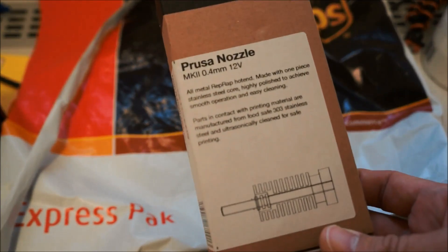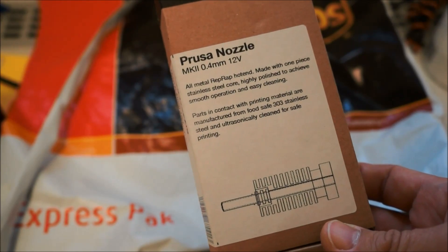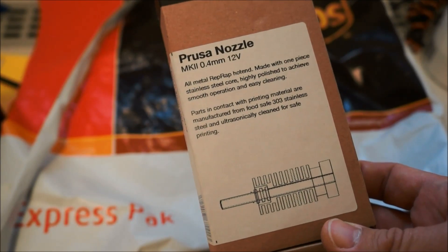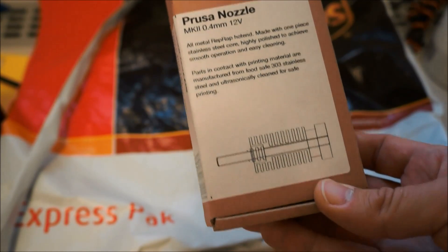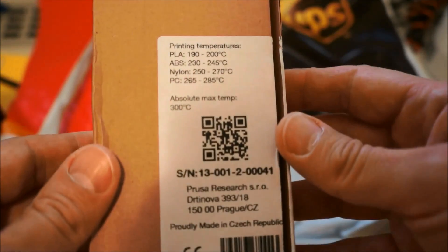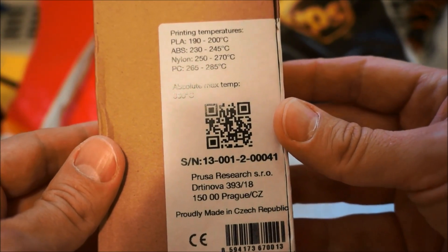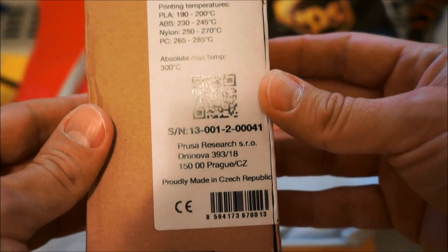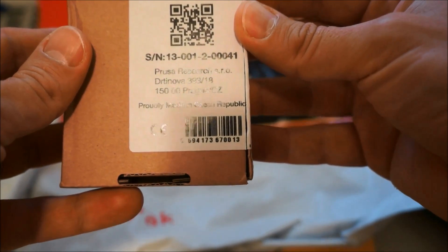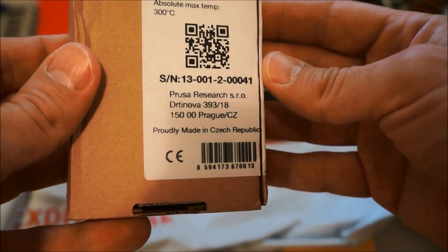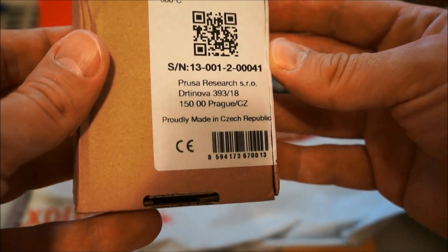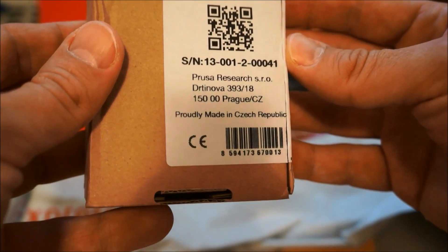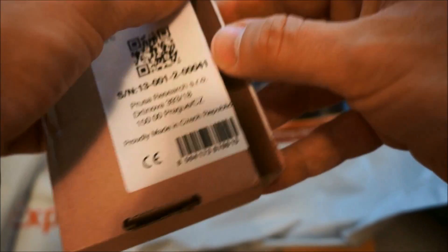This is the nozzle Mach 2, 0.4 millimeters, working on 12 volts, made from stainless steel. On the back side are some recommendations for printing temperatures. It's made in Czech Republic, which is an improvement over the first batch which was made in China. Okay, so I just opened this.